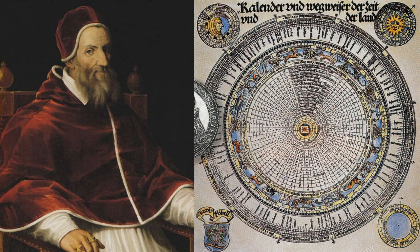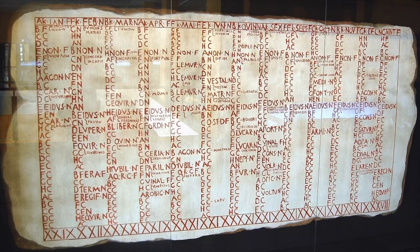In Australia, the main calendar we use right now is the Gregorian calendar, which was made by Pope Gregory in 1592. That was based on the Julian calendar, which was made by Julius Caesar in 46 BCE.